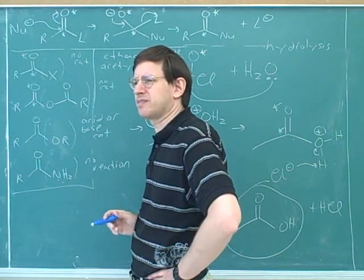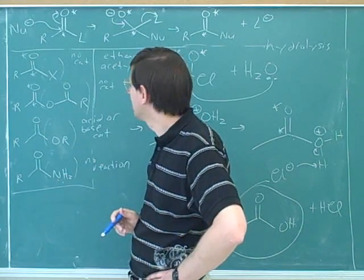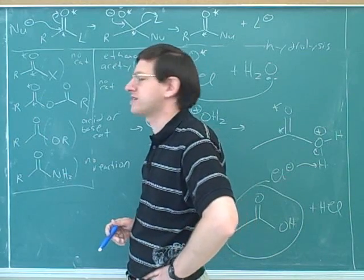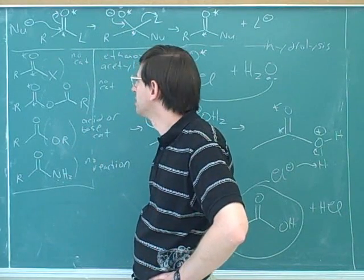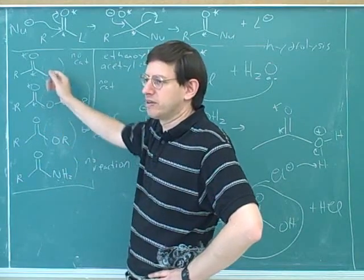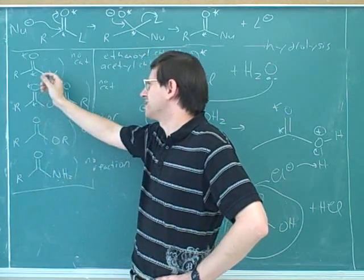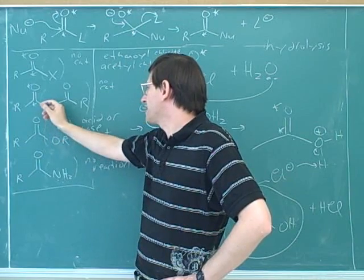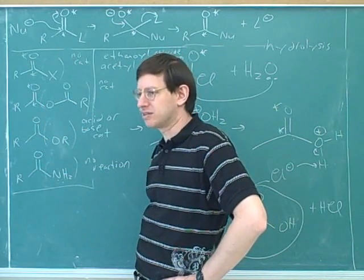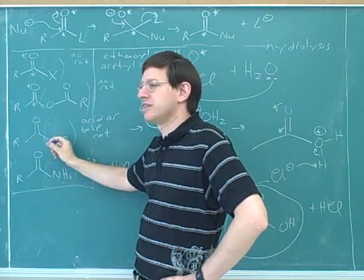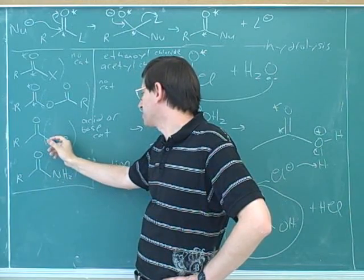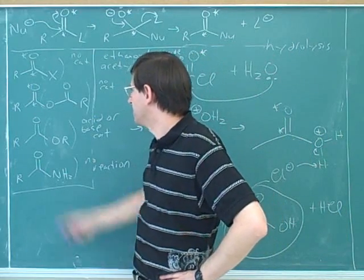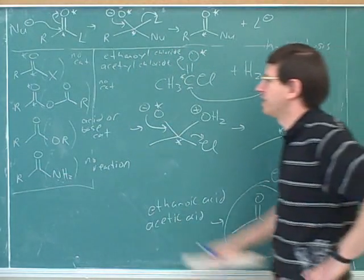The other reason for the order of reactivity is based on leaving group ability — who can better stabilize a negative charge when it leaves. Which has the best leaving group? Halogens are the best — we know chlorine, bromine, and iodine are good leaving groups. Why would the carboxylate oxygen better stabilize a negative charge than a simple alkoxide oxygen? Because of resonance structures that help stabilize the negative charge. And why would oxygen better stabilize a negative charge than nitrogen? Because oxygen is more electronegative. So the reactivity order is explained by leaving group ability.